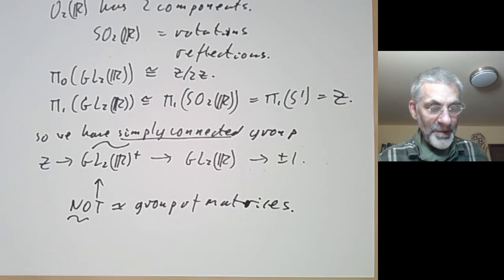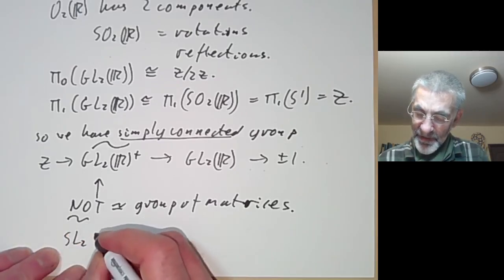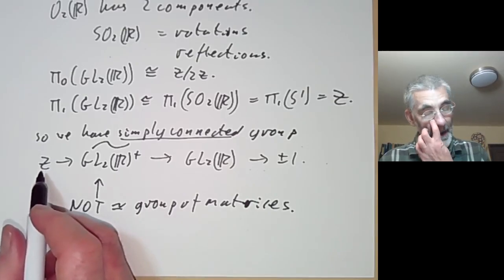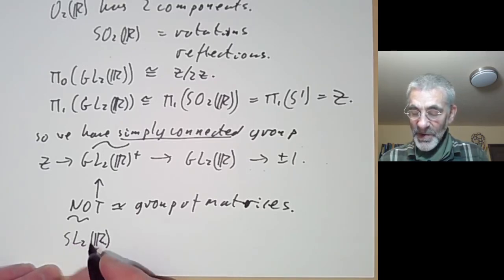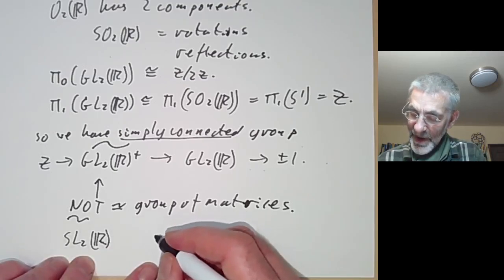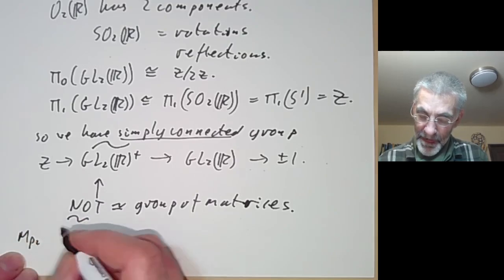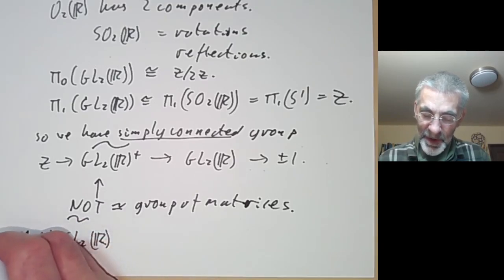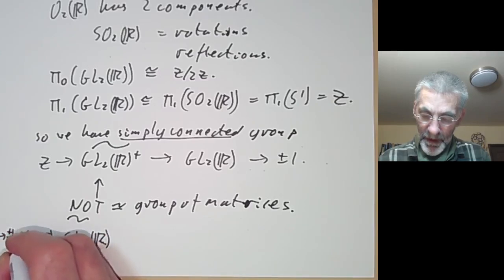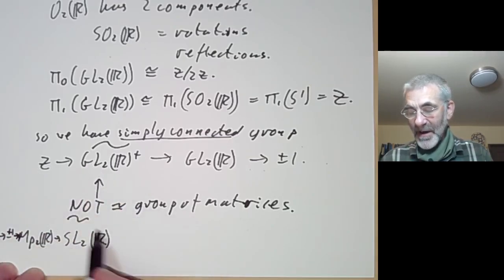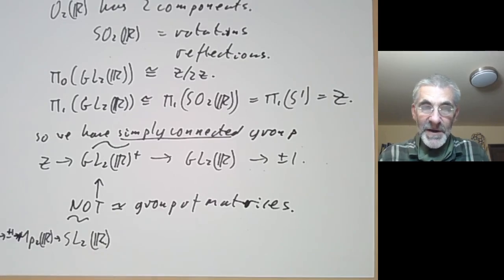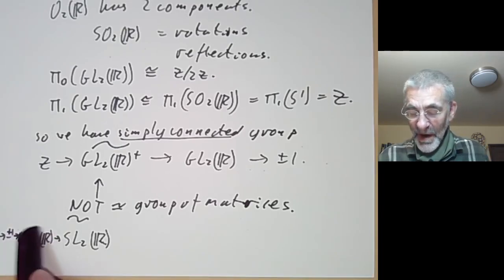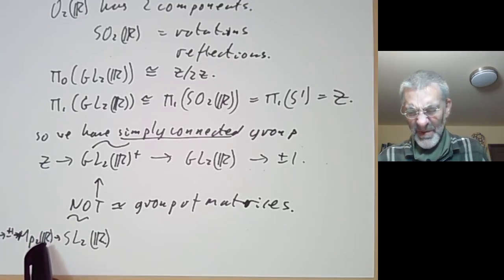Similarly the group SL2(R) also has a universal cover with an infinite centre Z, and these covers are also a bit mysterious. The only one that turns up in practice is the so-called metaplectic group, where you take the double cover of SL2(R). You can take a cover with fundamental group Z but then quotient out by 2Z to get a group that's just a double cover. This double cover of SL2(R) actually turns up in the theory of modular forms — it's very closely related to modular forms of half-integral weight. But again it has no faithful finite dimensional representation, so it's a little bit tricky to handle.